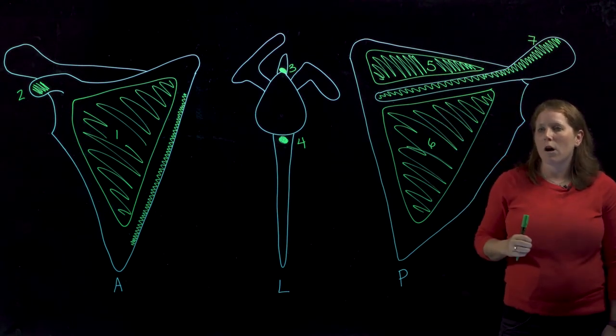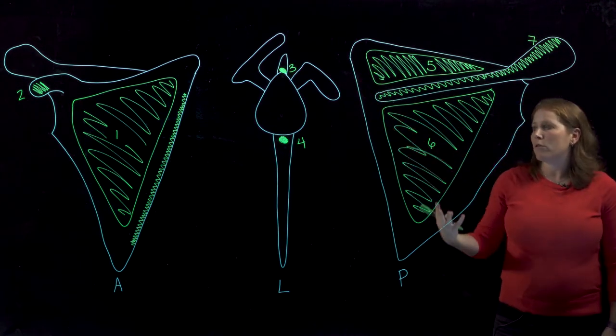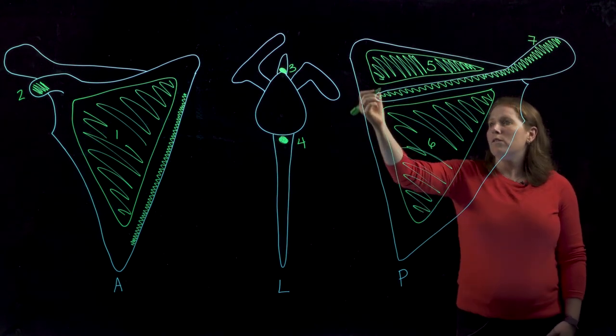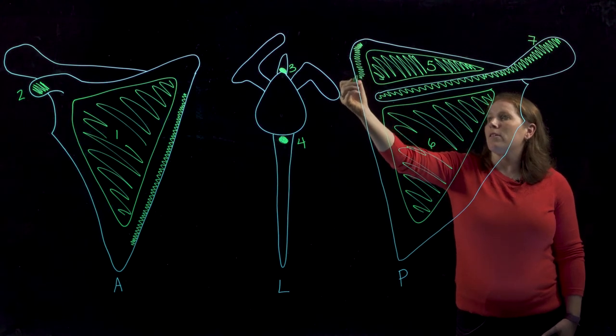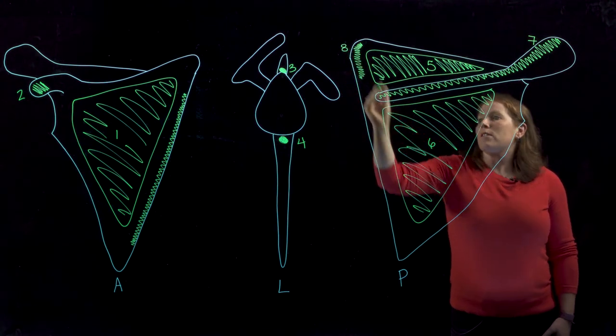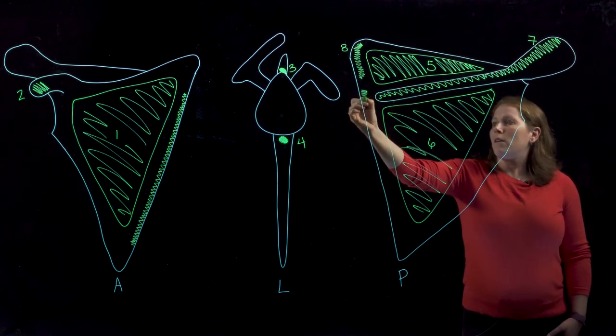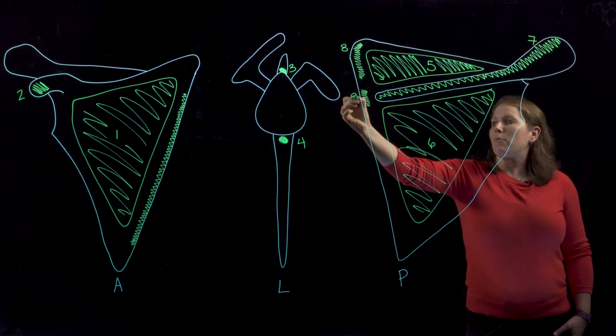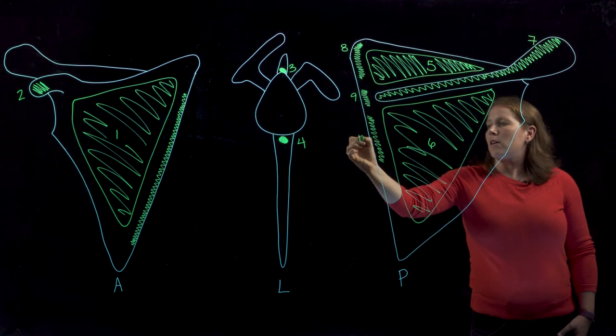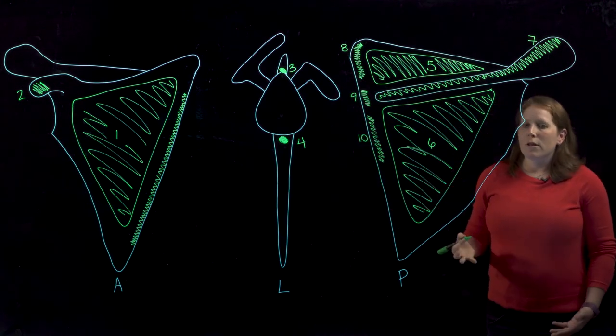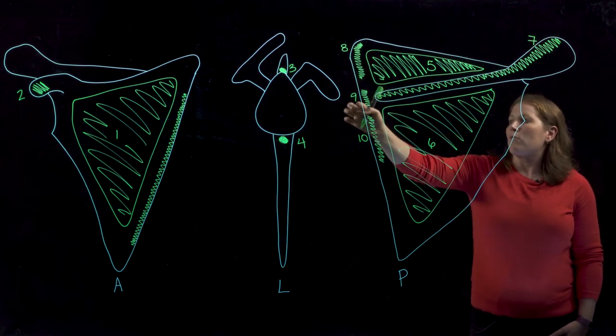If we then look at this medial border from a posterior view, we'll see three muscles that attach along the medial border in this kind of a pattern. We have one muscle that attaches to the medial border superior to the spine, one sort of right at the spine, and one inferior to the spine. And that's a trio of muscles that you probably already think of together: we have levator scapula, rhomboid minor, and rhomboid major.